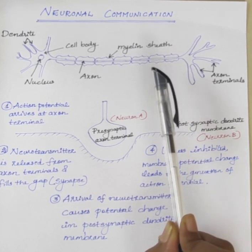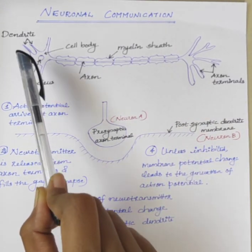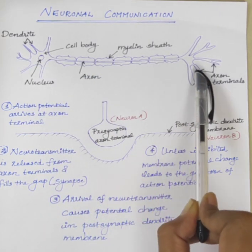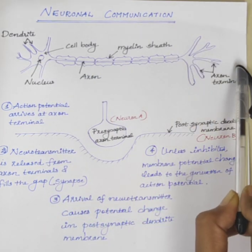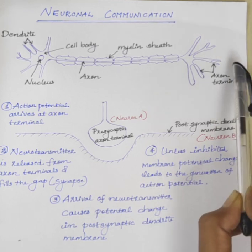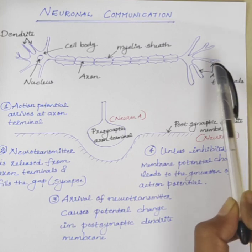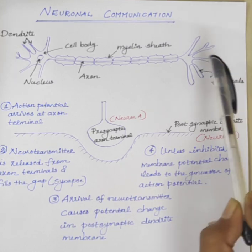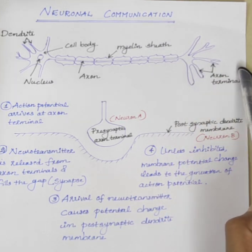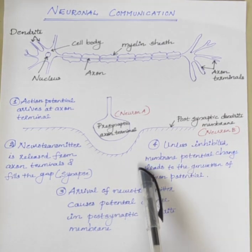In short, we can say that impulses travel from dendrite to cell body to axon, and then to the dendrite of the next neuron. Like this, information passes from one neuron to another neuron.